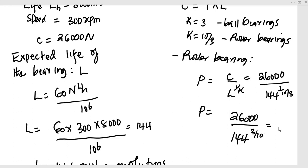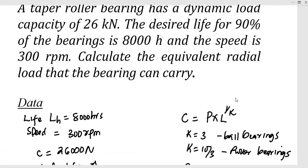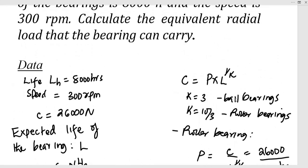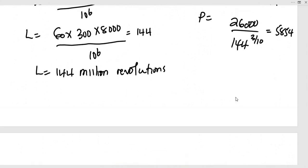And this is equal to 5854.16. So the equivalent radial load of the bearing is going to be P equal to 5854.16 Newtons.